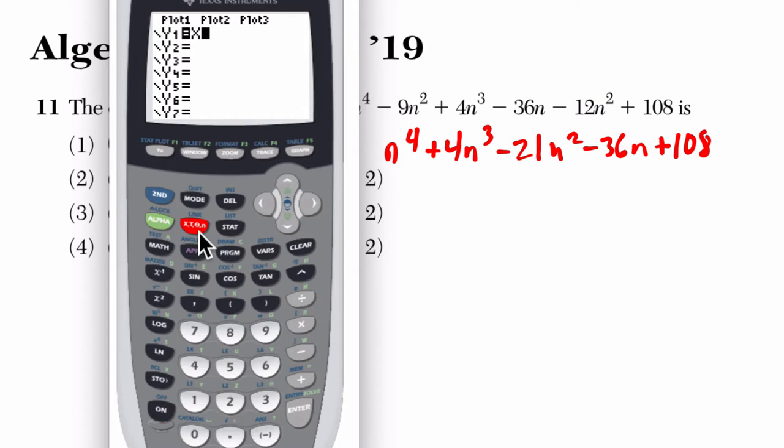So let's graph this thing. We have x to the fourth plus 4x cubed minus 21x squared minus 36x plus 108. If we graph this thing, let's just see what happens. How does it look for us?